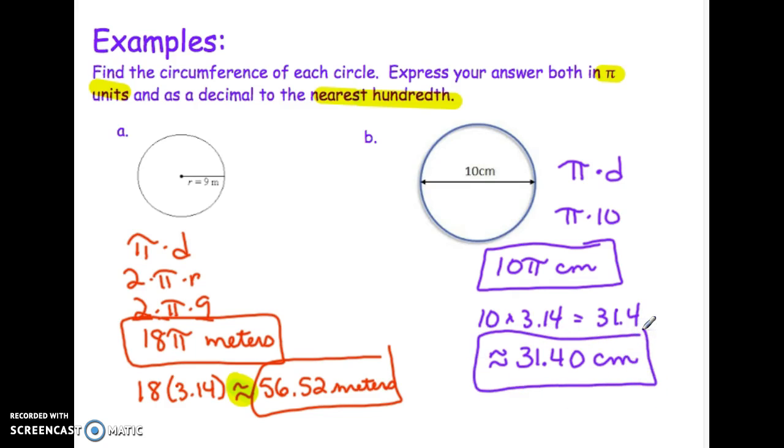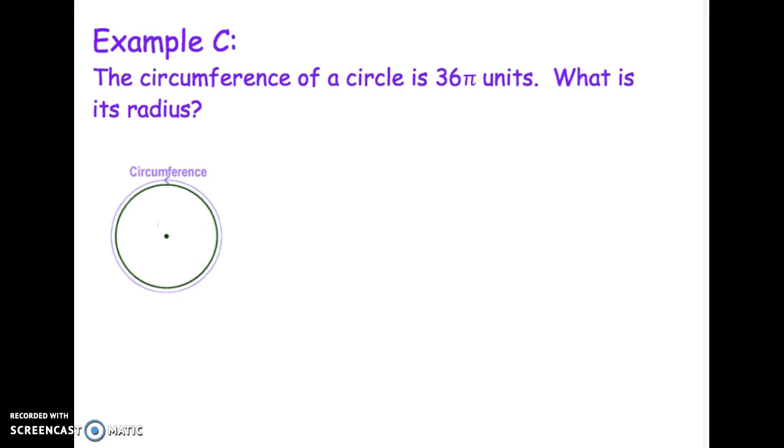Let's do one last one. Sometimes I give you the circumference, and you have to find the radius or the diameter. The circumference of the circle is 36π units. Remember, we find circumference by π times diameter, or 2 times π times radius. This time I'm telling you that π times diameter equals 36π. You're going to notice that these π values are exactly the same. Therefore, the diameter must equal 36.